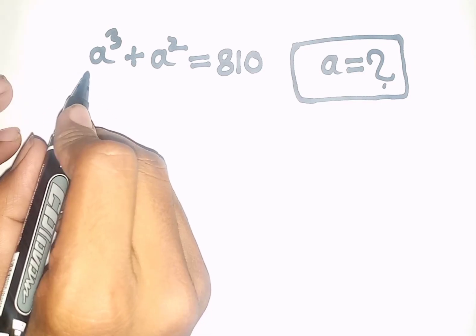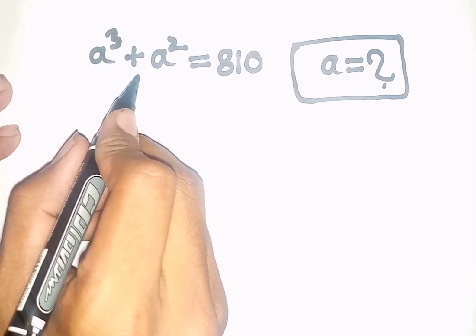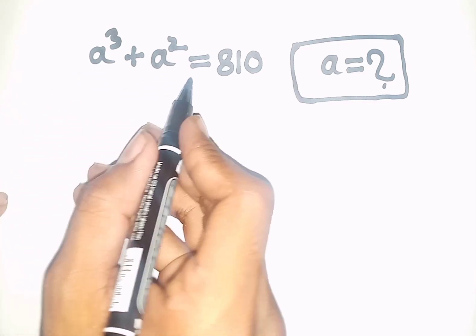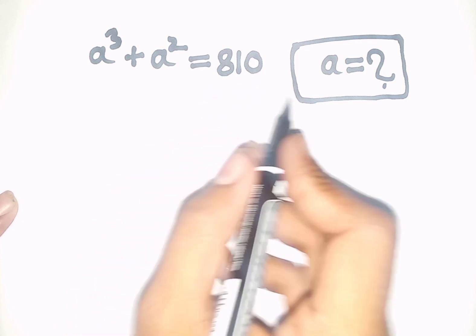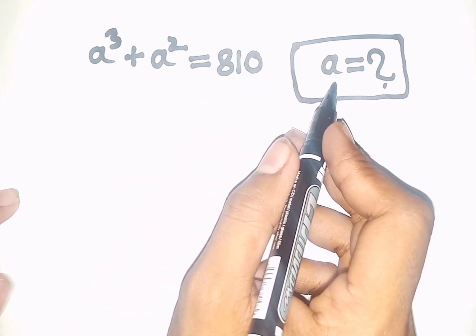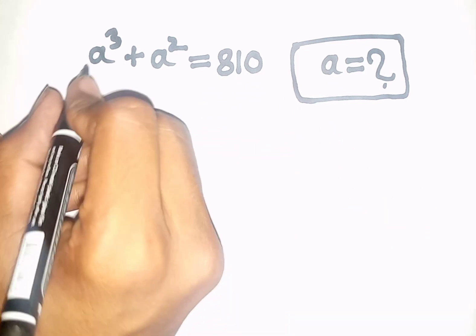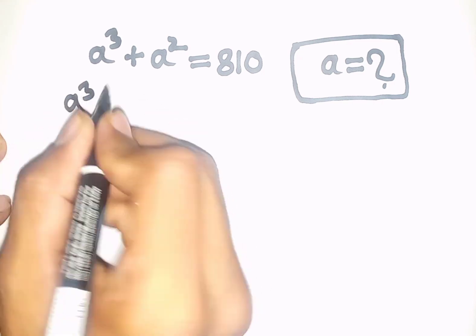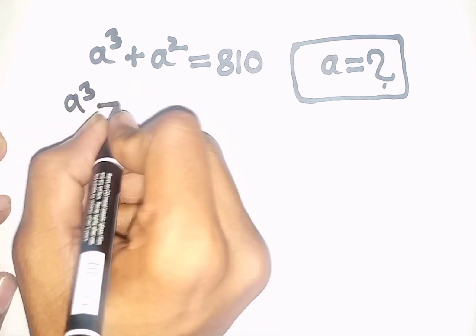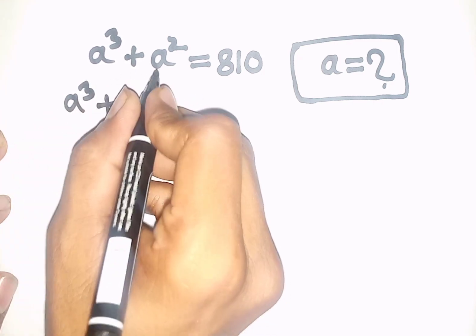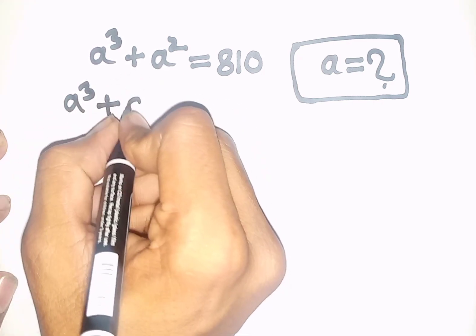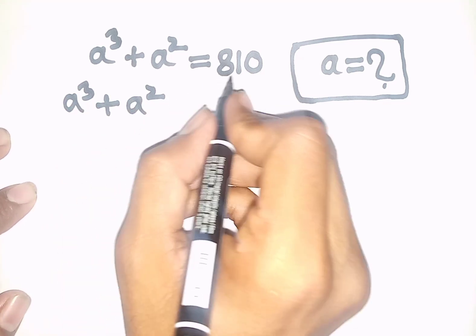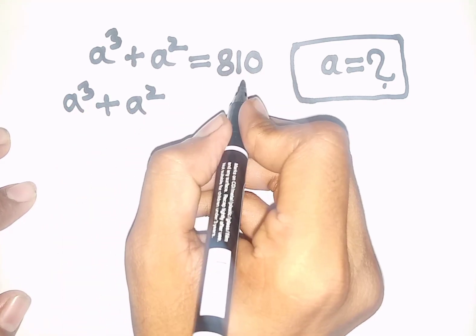How to solve a³ + a² = 810. Find the value of a. So we have a³ + a² = 810.